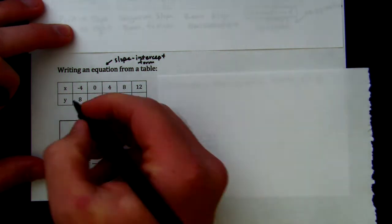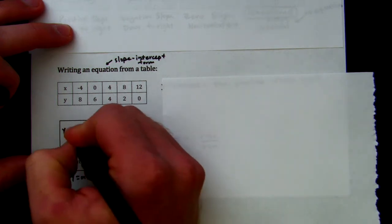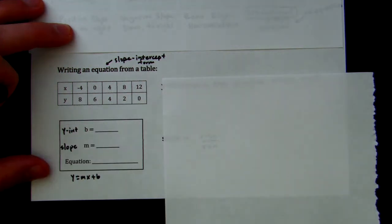If we remember, our m is slope, and our b is y-intercept. So in order to write this equation from this table in slope-intercept form, we need two things: we need our y-intercept and we need our slope.